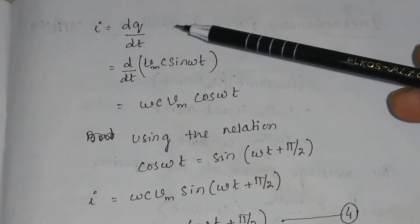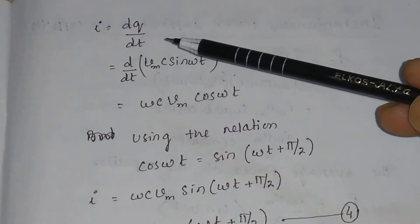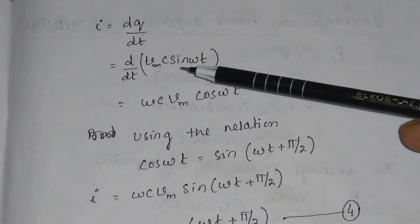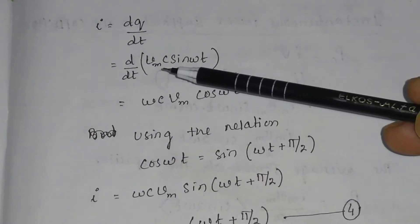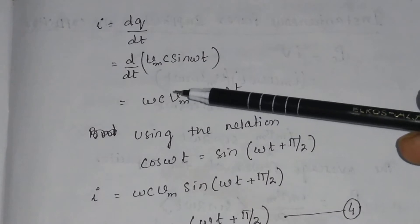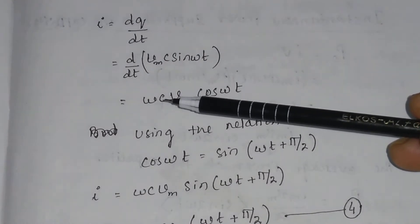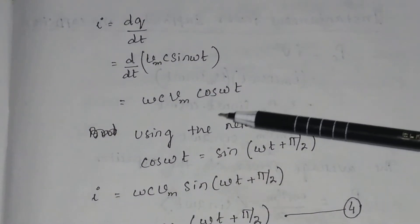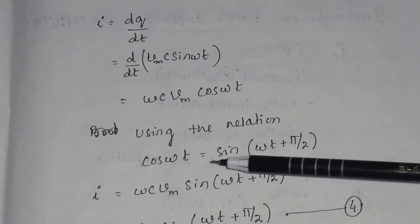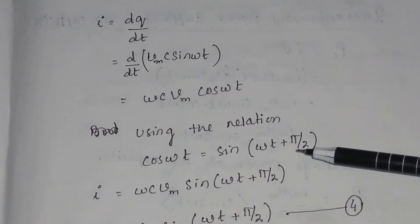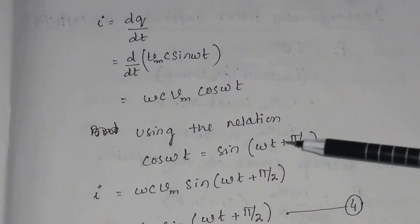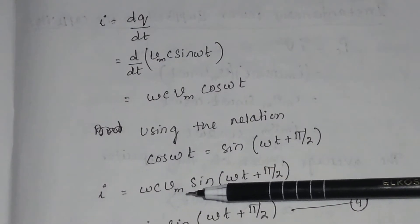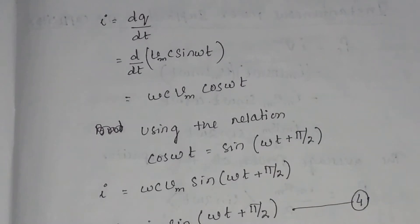We know current I = dQ/dt. Since Vm is constant, we can take it outside, and C is also constant, we can take it outside. The derivative of sin(ωt) is ω cos(ωt). Using the relation cos(ωt) = sin(ωt + π/2), we substitute to get I = ωC Vm sin(ωt + π/2).